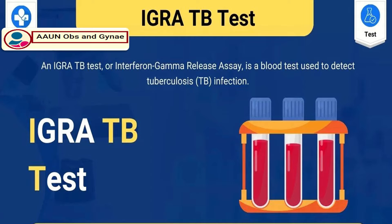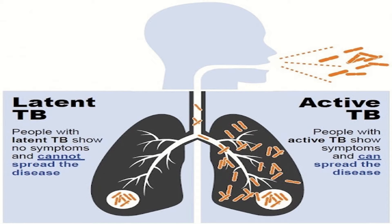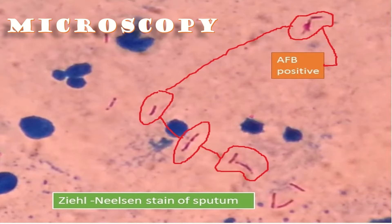The interferon gamma release assay (IGRA) detects the cytokine interferon gamma, which is produced following stimulation of tuberculosis-specific antigens. Although IGRA is not validated for use in pregnant women, it is routinely performed in pregnancy. Like the tuberculin skin test, IGRA does not differentiate latent from active infection.